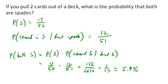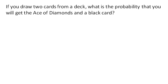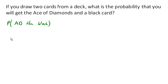Here's another one. If you draw 2 cards from the deck, what's the probability that you'll get an ace of diamonds and a black card? This one's a little trickier because the events are different. There are 2 different ways this could happen: either we get the ace of diamonds then the black card, or separately, we get a black card then the ace of diamonds, because it's hard to think about putting those 2 cases together.